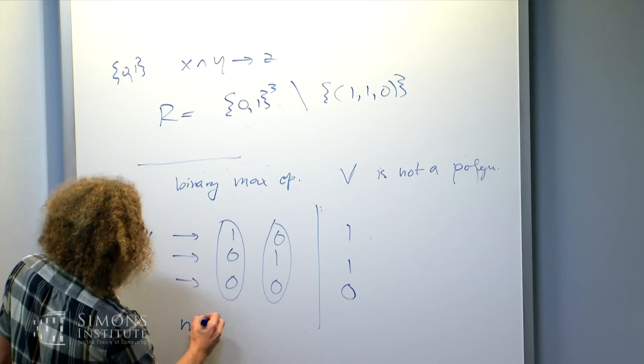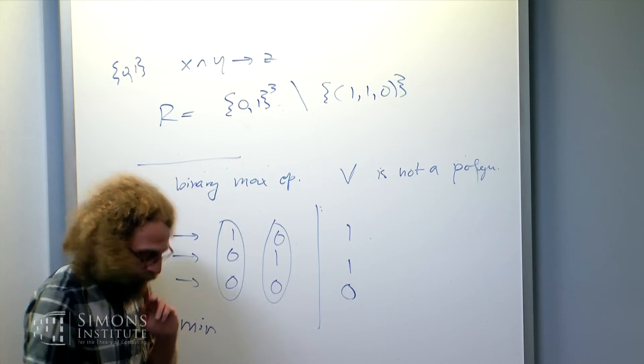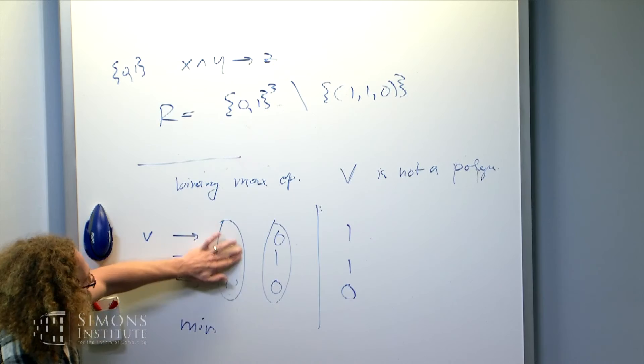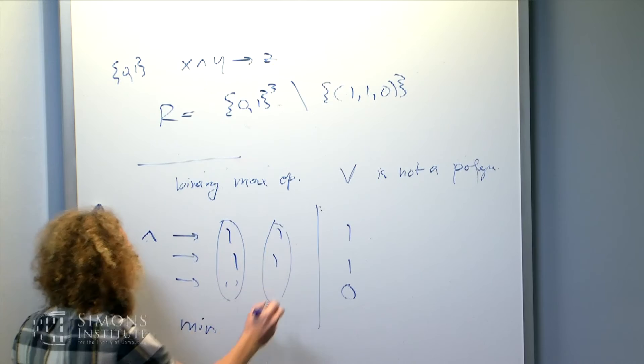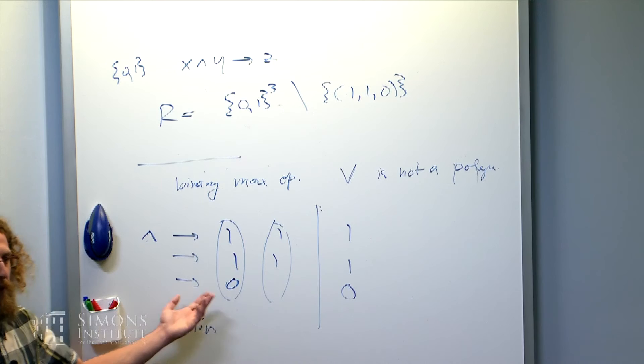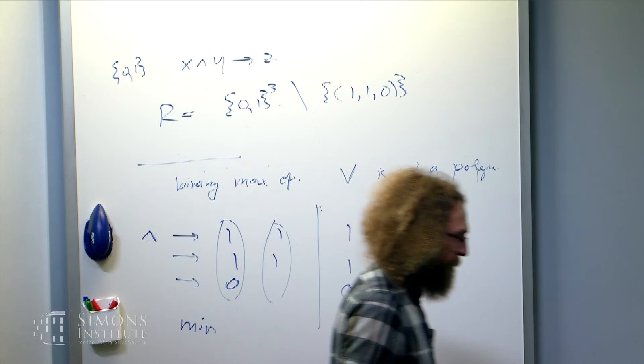On the other hand, minimum is a symmetry. The only bad tuple is (1,1,0). If you try to fill in tuples so that applying min gives (1,1,0), you need (1,1) in both rows of the first two columns and at least one (0) in the last — but you can't find a contradiction. So minimum is a polymorphism, and this is actually the reason why Horn-SAT is tractable. Note: 3-SAT has no symmetries of its hierarchy — not even the trivial ones beyond projections.